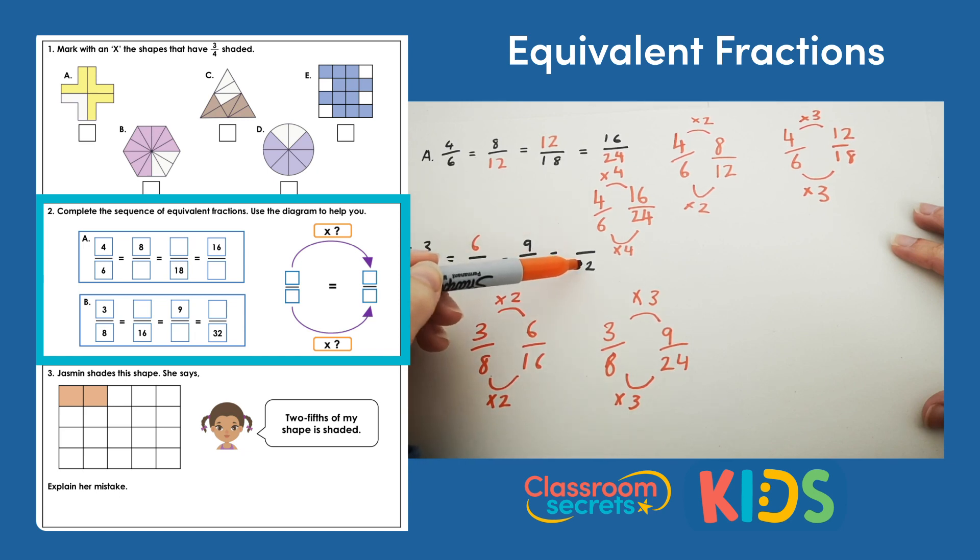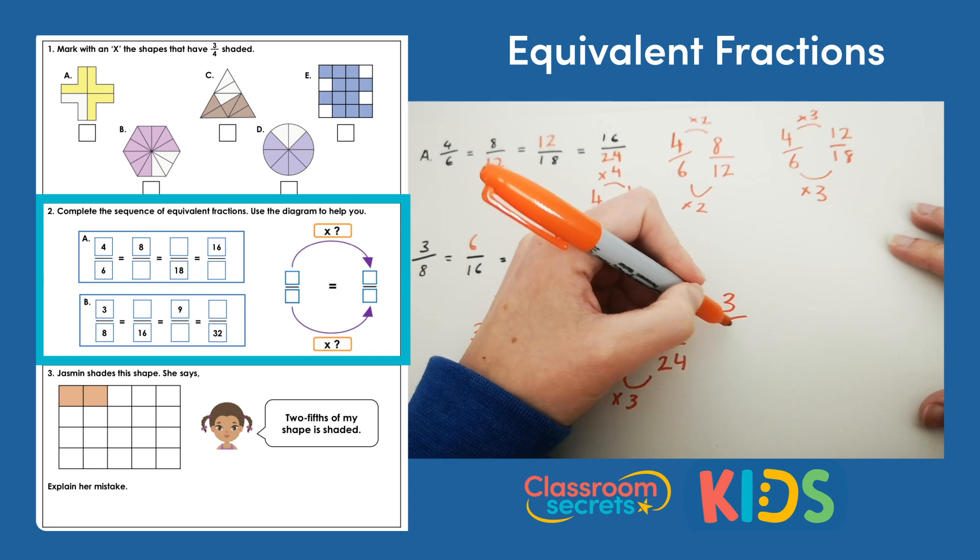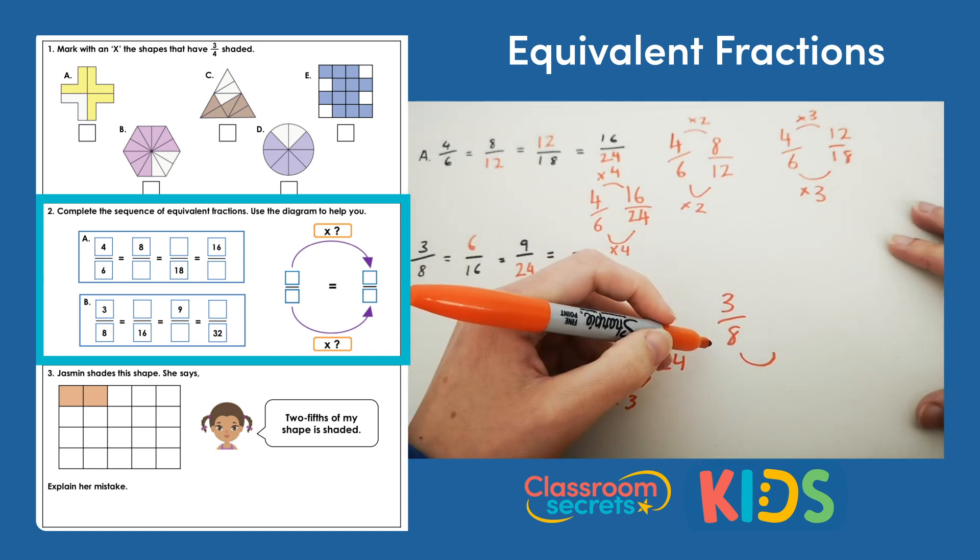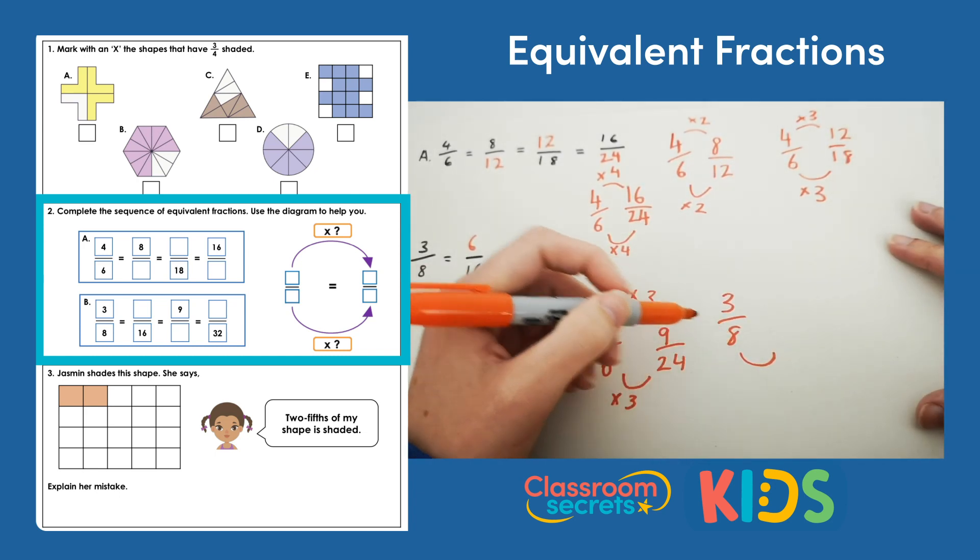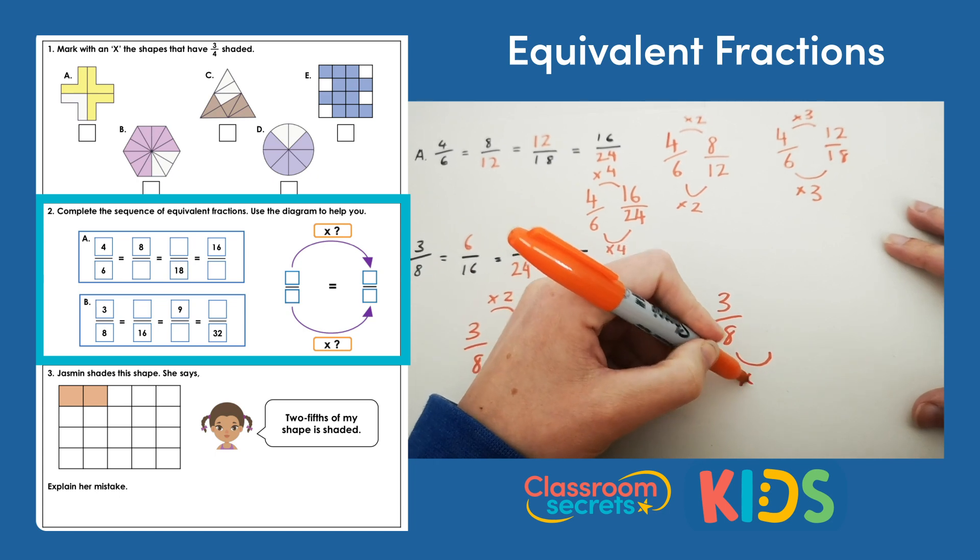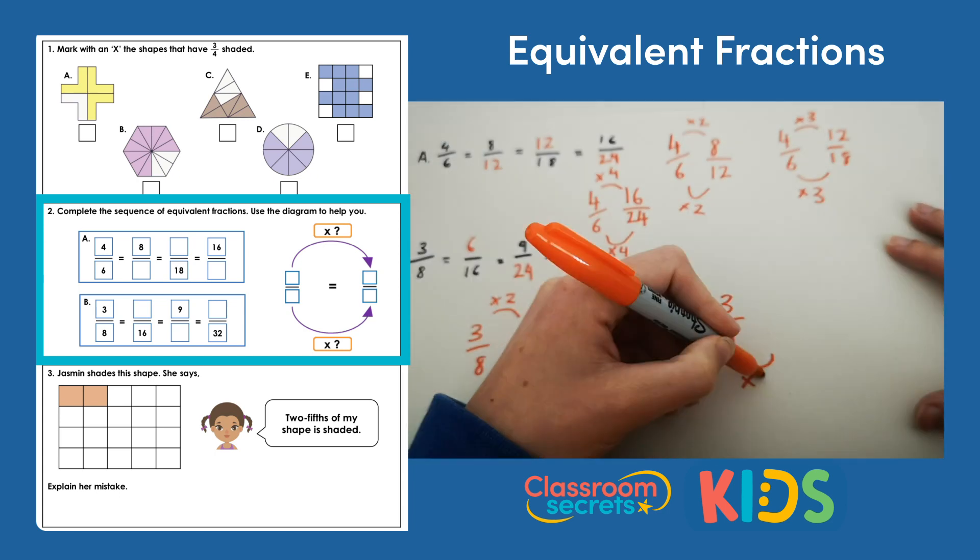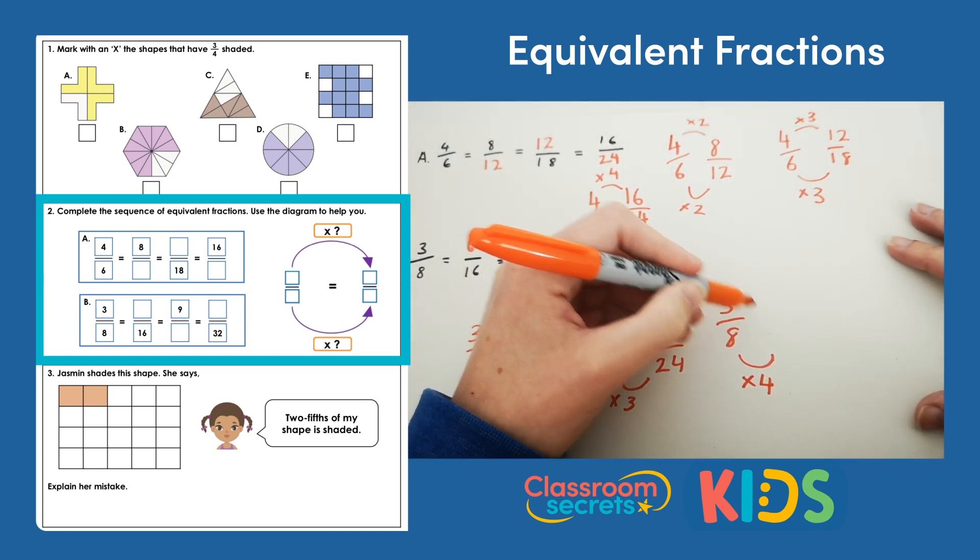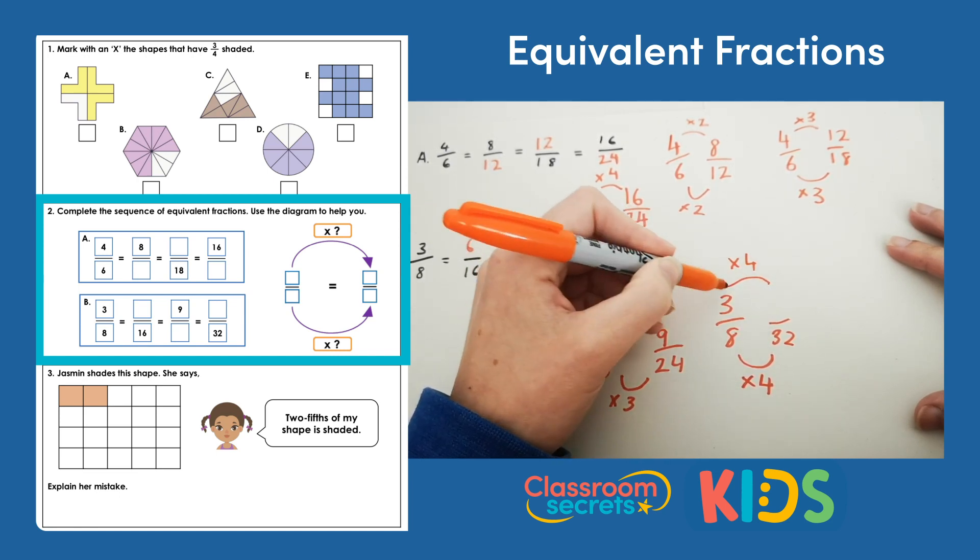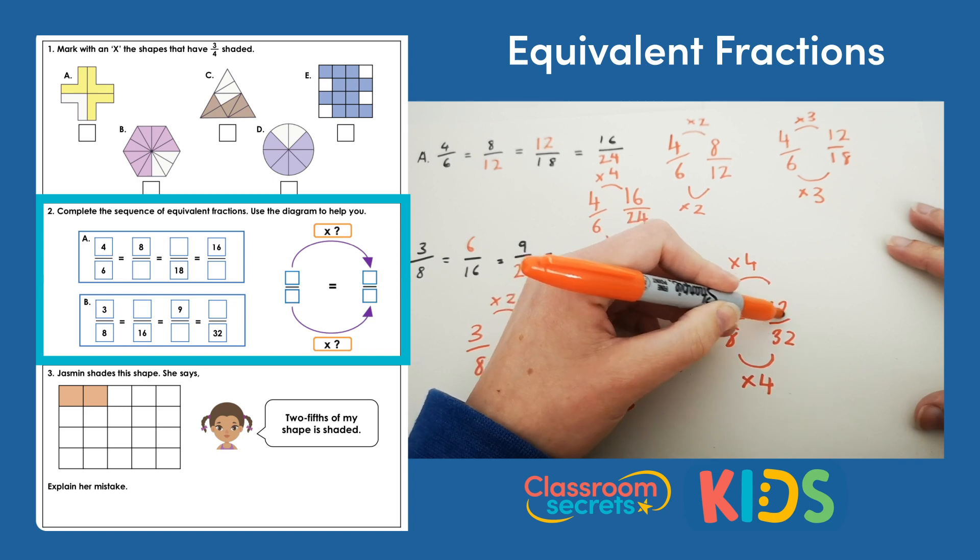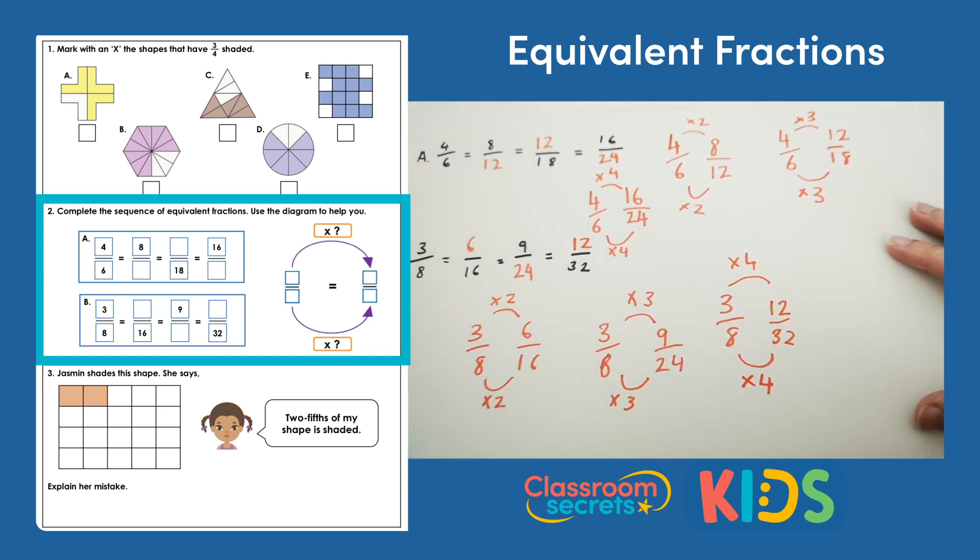And then finally 32. So to make 8 into 32, what we need to do is multiply by 4. So whatever you do to the bottom you must do to the top. So 3 times 4 is 12. So 3 eighths is equal to 6 sixteenths which is equal to 9 twenty-fourths which is equal to 12 thirty-seconds.